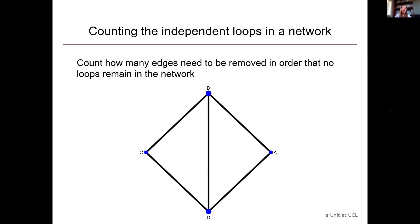Now I'm going to explain more about finding the independent loops in a network. There are algebraic ways of finding independent loops, but there's also a very nice visual way. We can count how many edges need to be removed in order that no loops remain in the network.